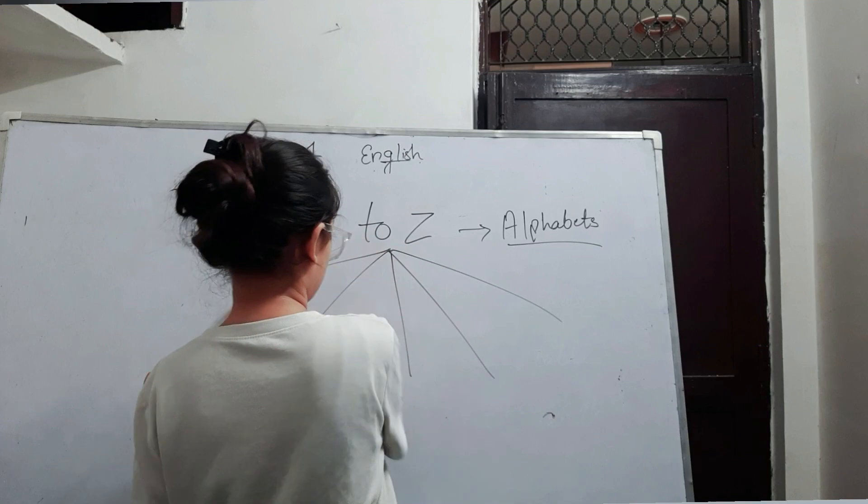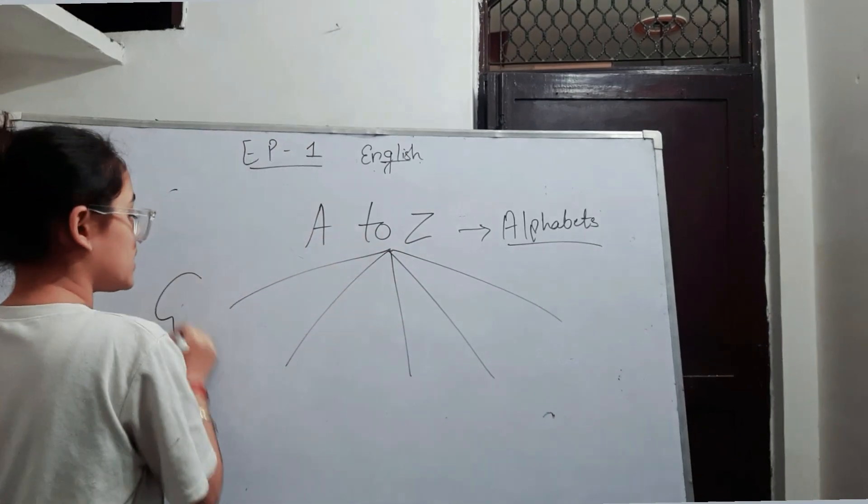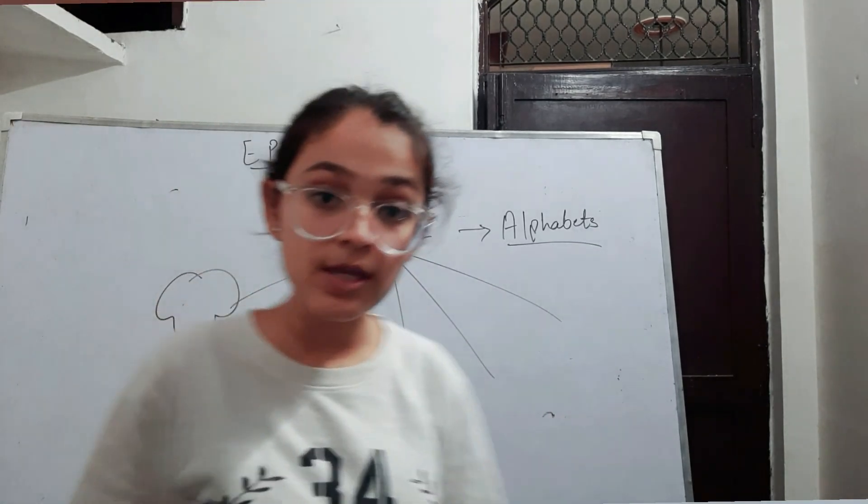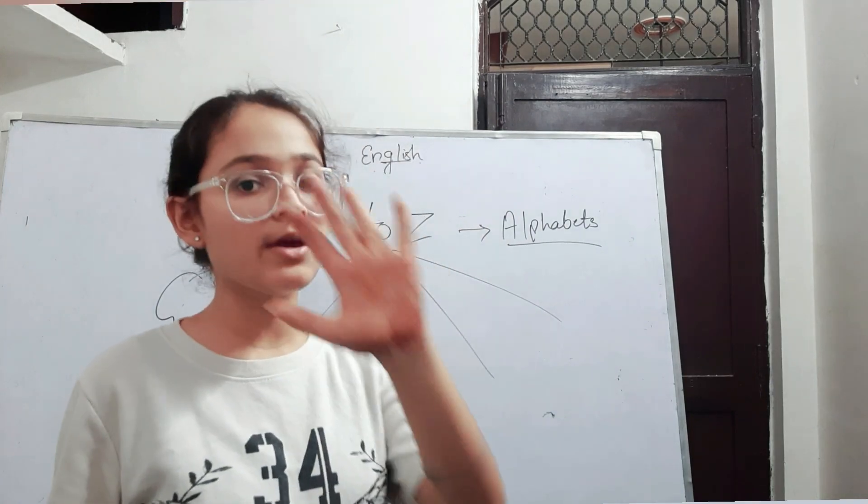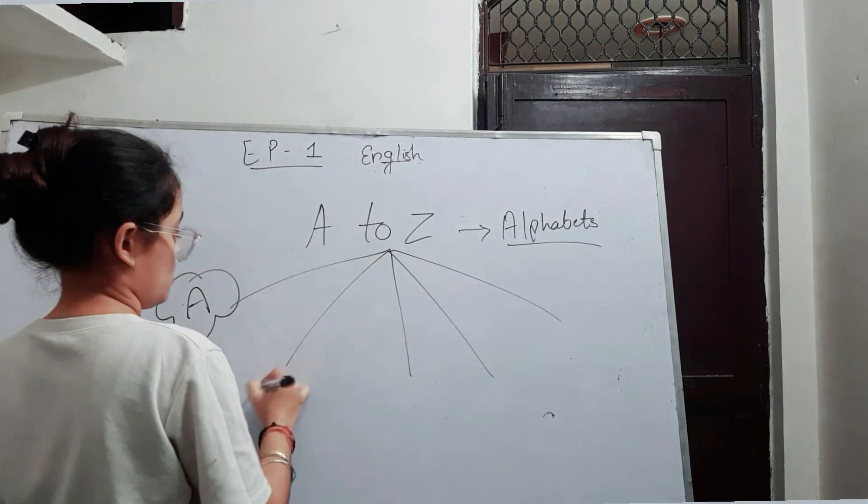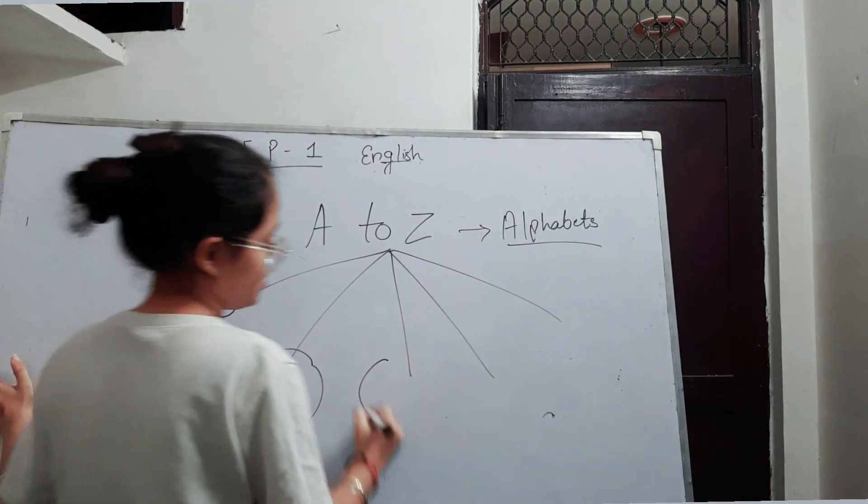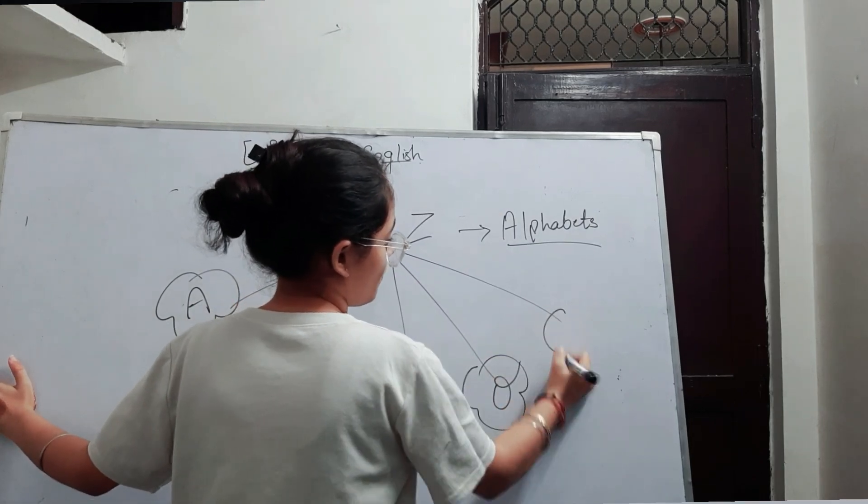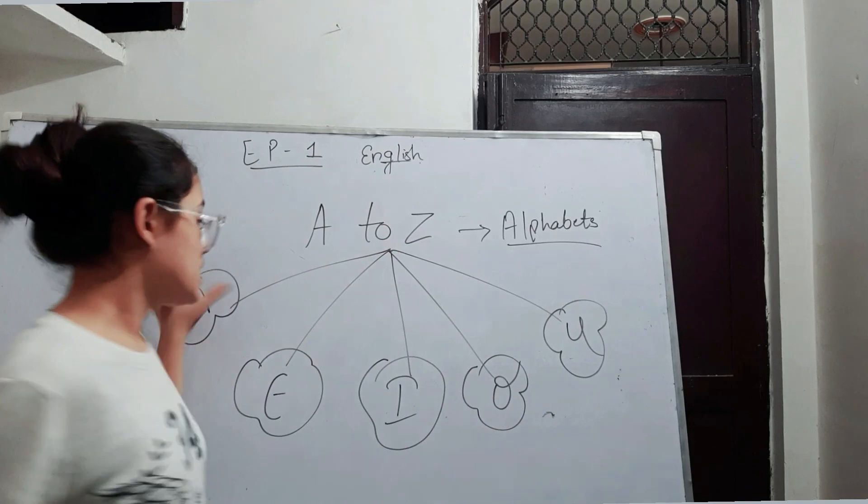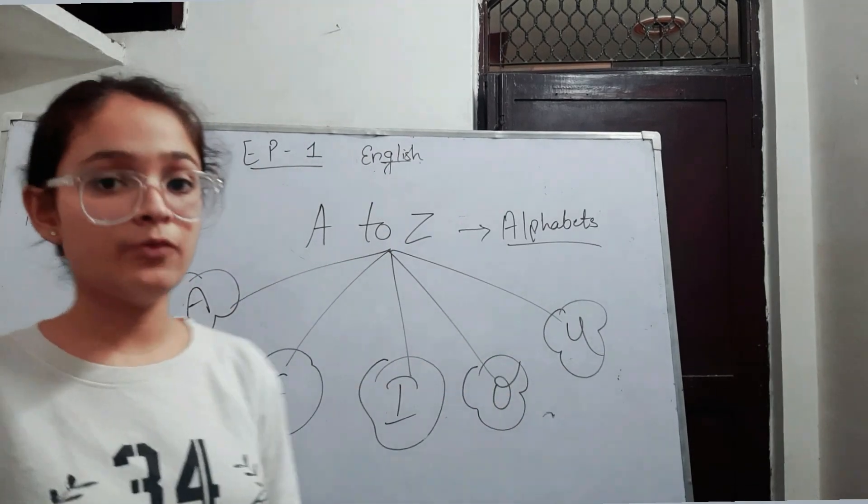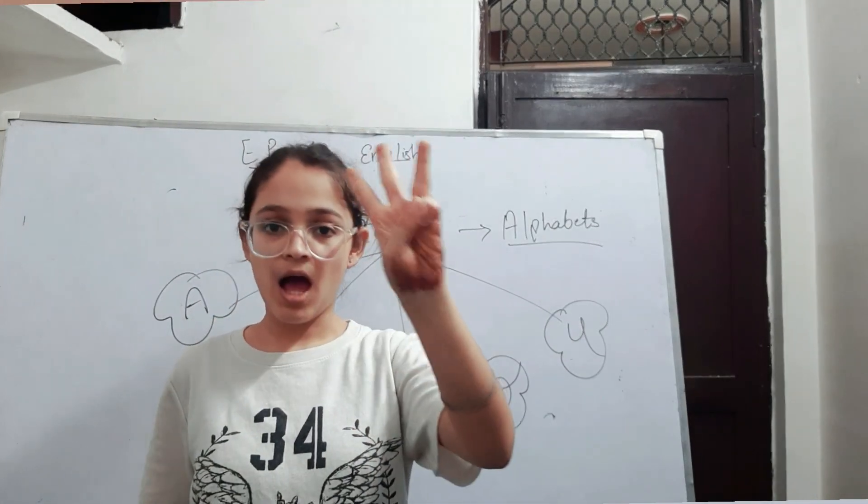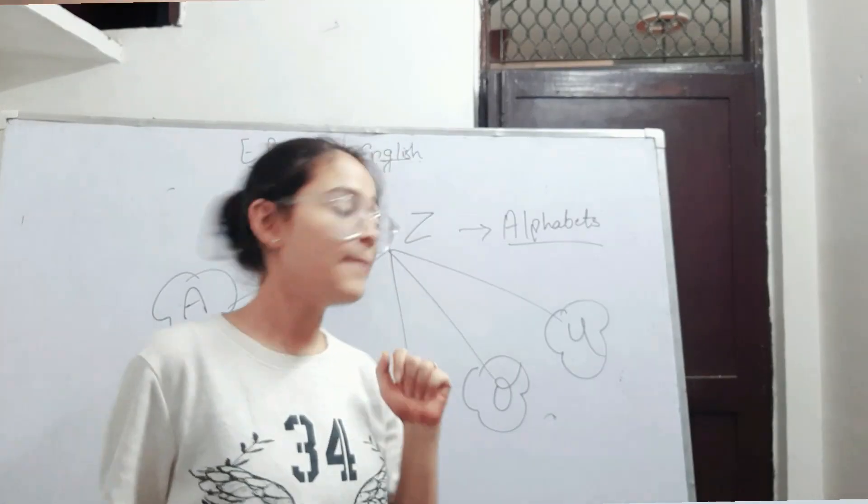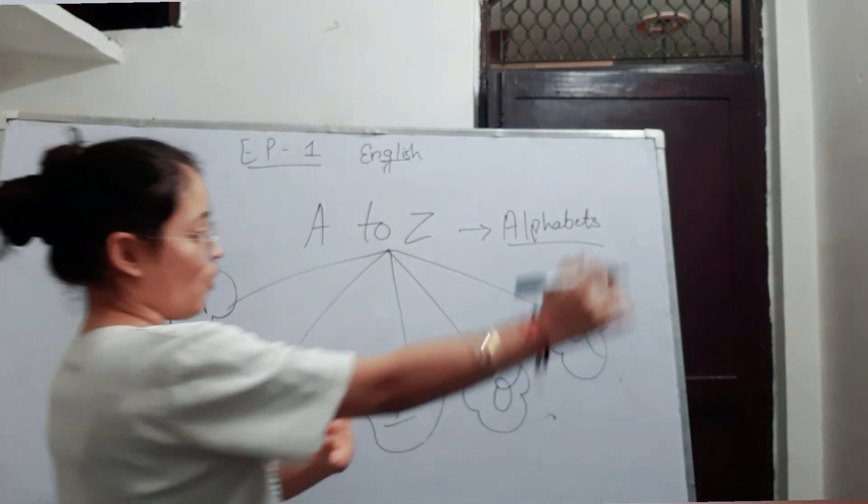Let's start with the basic form. Those forms we have to share. A, E, I, O, U. These are all 5 vowels: A, E, I, O, U. Okay, so these 5 vowels.